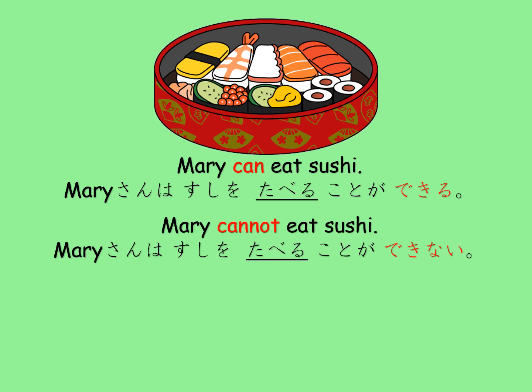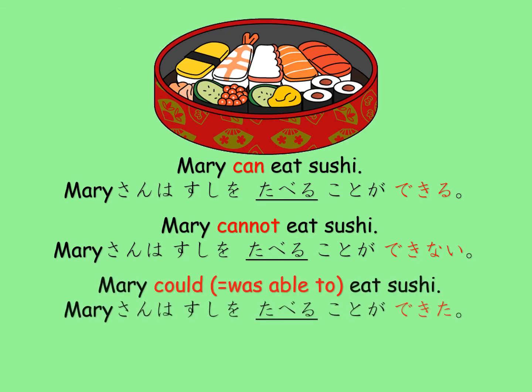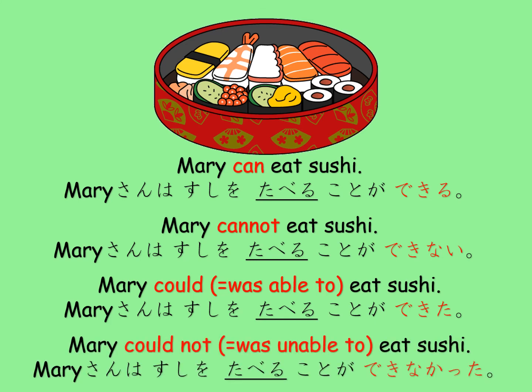マリーさんは寿司を食べることができない means 'Mary cannot eat sushi.' マリーさんは寿司を食べることができた means 'Mary was able to eat sushi.' マリーさんは寿司を食べることができなかった means 'Mary could not / was not able to eat sushi.'